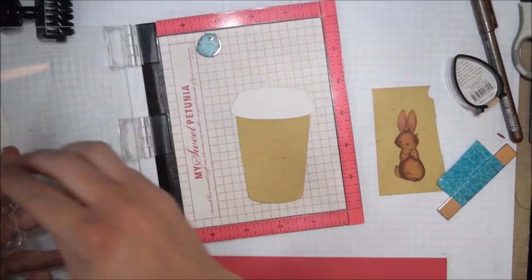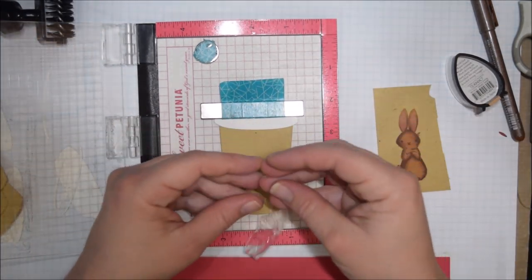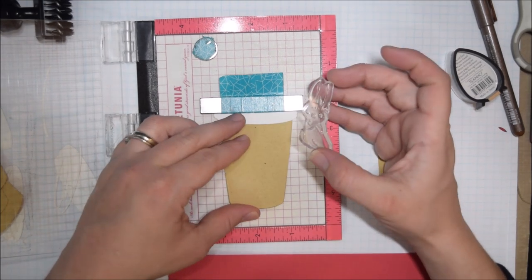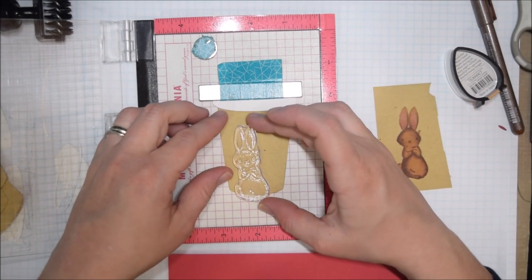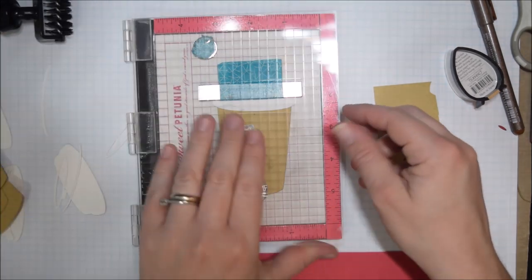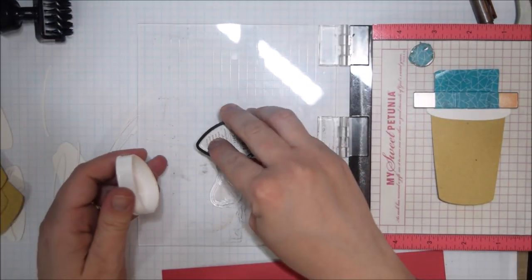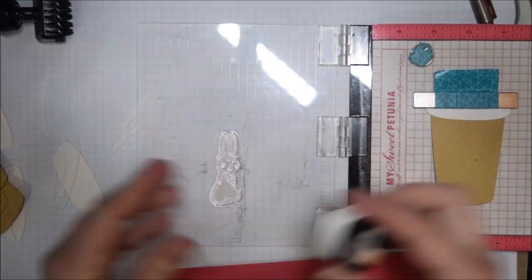Now I want to figure out where I want to put my bunny. With the coffee cup die cut, it's going to be a little bit harder to make sure it goes back in the same exact place in the Misti because I am going to stamp a few of these. I ultimately made four of this card, and that was in part because I wanted to practice some no-line coloring.